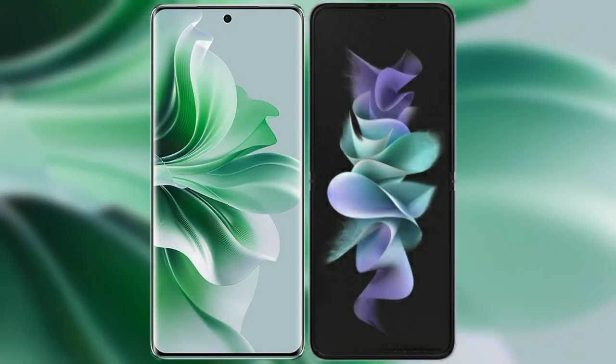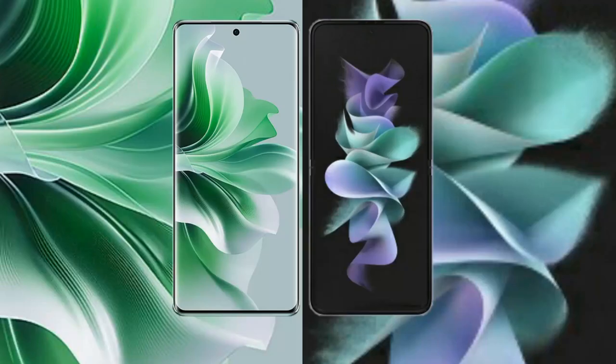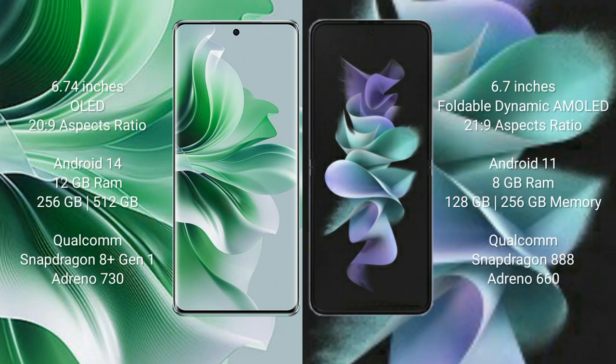I will compare the new Oppo Reno 11 Pro with Samsung Galaxy Z Flip 3. Oppo Reno 11 Pro comes with a 6.74-inch OLED display and an aspect ratio of 20:9. Samsung Galaxy Z Flip 3 comes with a 6.7-inch foldable dynamic AMOLED display and an aspect ratio of 21:9.